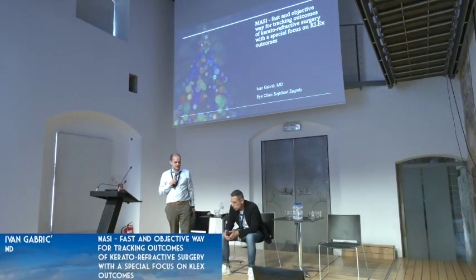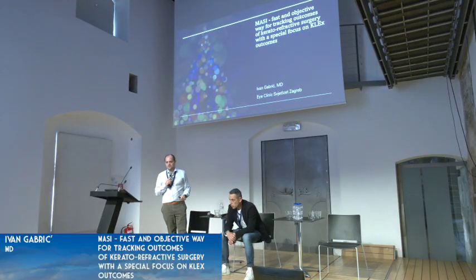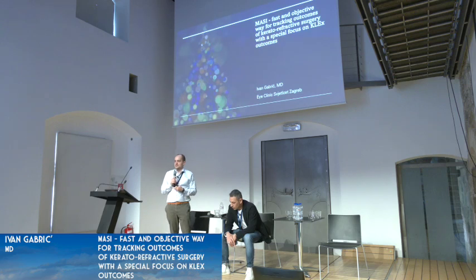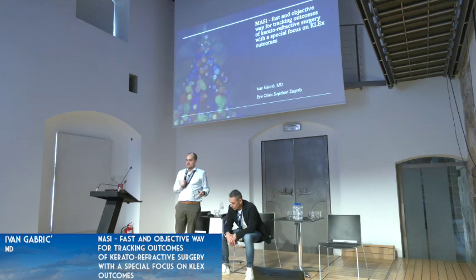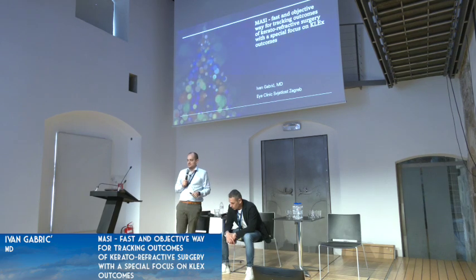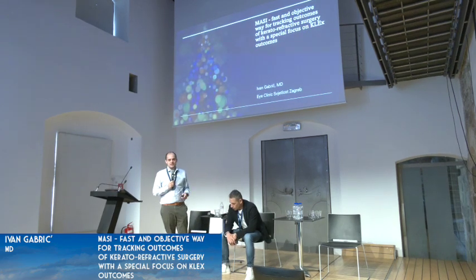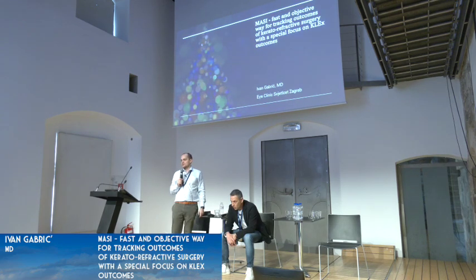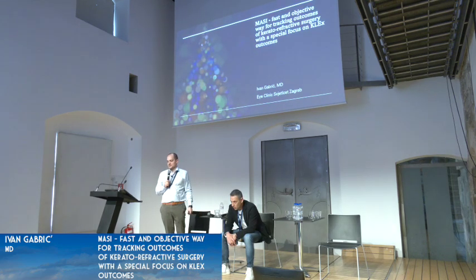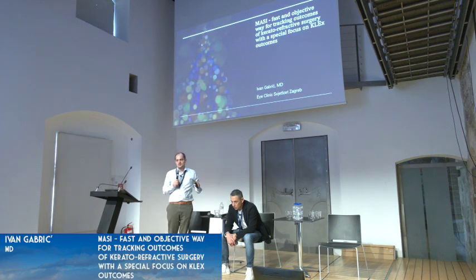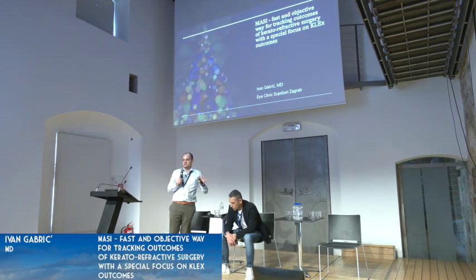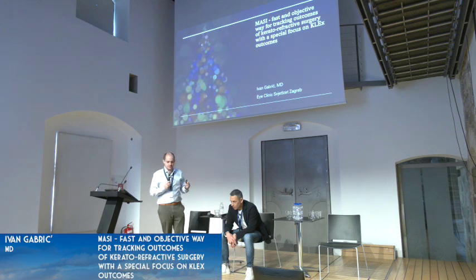As my dear friend Versace already said, you can use the OSIRIS for many things. One of the things we use it for today is called MASI — the Micro Aberration Scatter Index. He showed you the mathematical formula, which looks very daunting and scary, but it's very simple at the end.